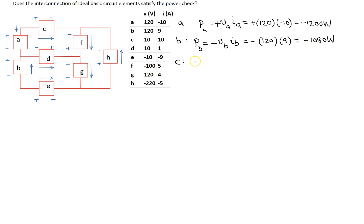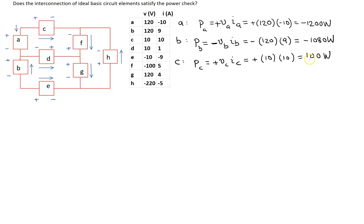Looking at element C, the power is voltage times current, P_C = V_C × I_C. For element C, the reference current is entering the terminal marked positive, so we use a plus sign. Substituting the values gives 100 watts. This positive answer means that element C is absorbing power.